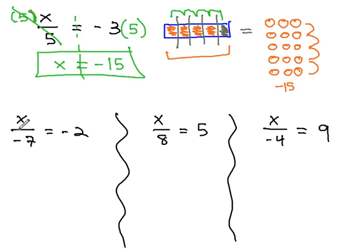In this first example at the bottom, we're dividing by negative 7. To get rid of that division, we multiply by negative 7 on both sides of the equal sign. The negative 7's divide out, and the x is finally alone, and negative 2 times negative 7 is positive 14.